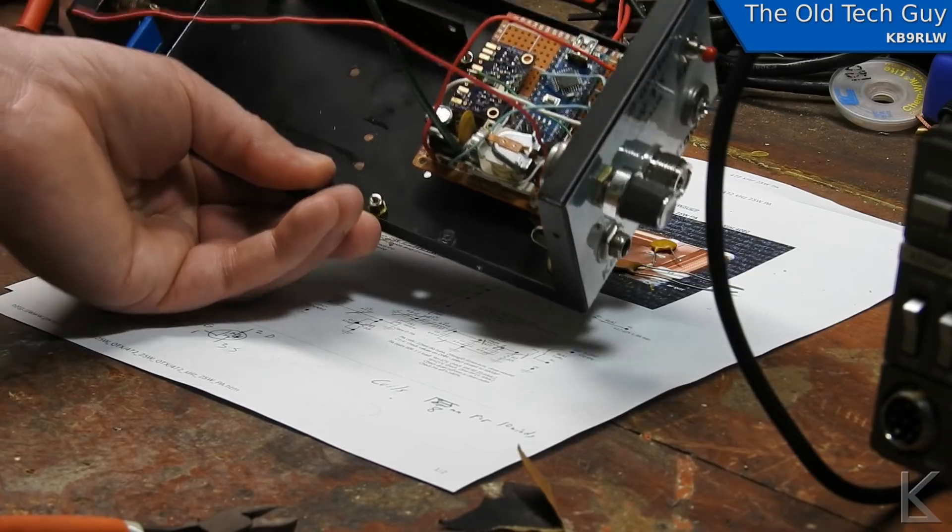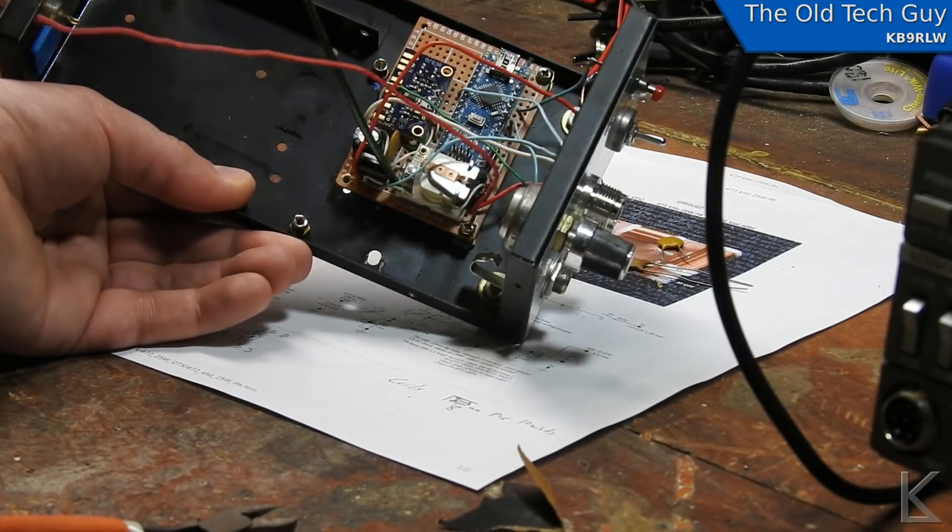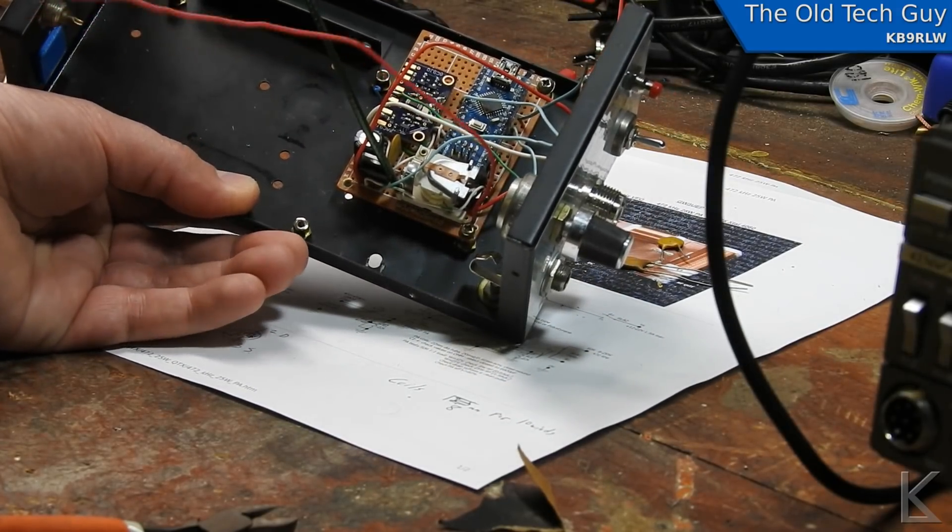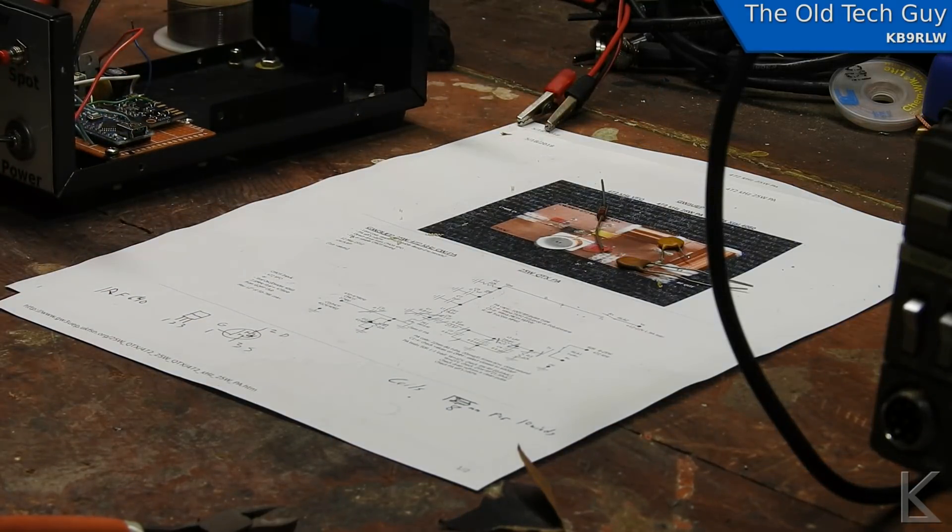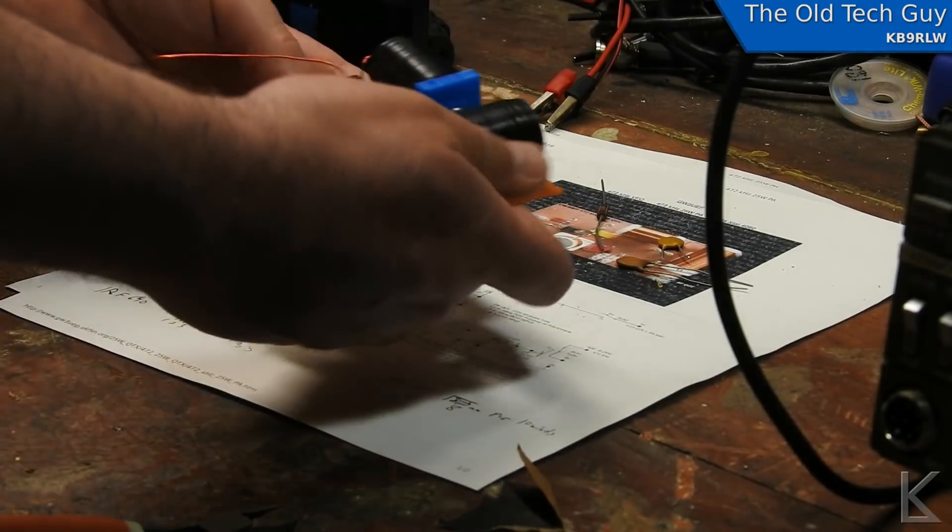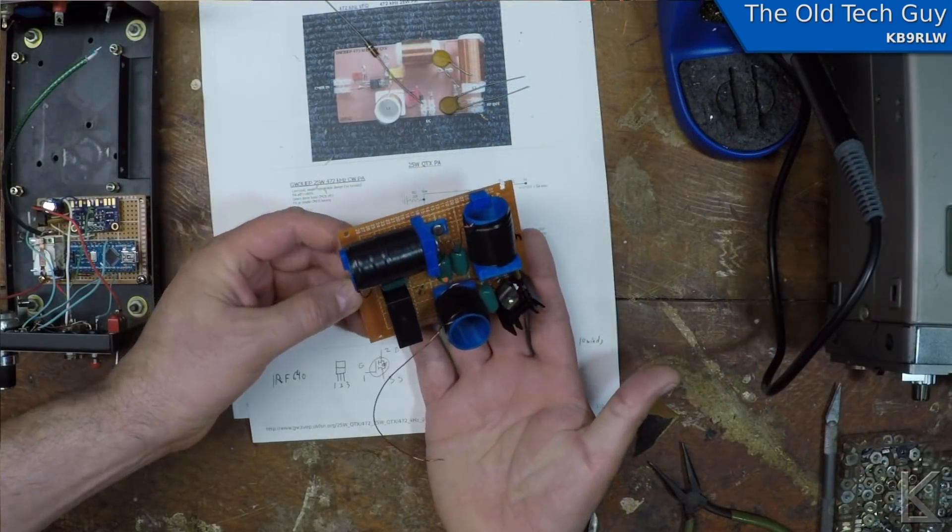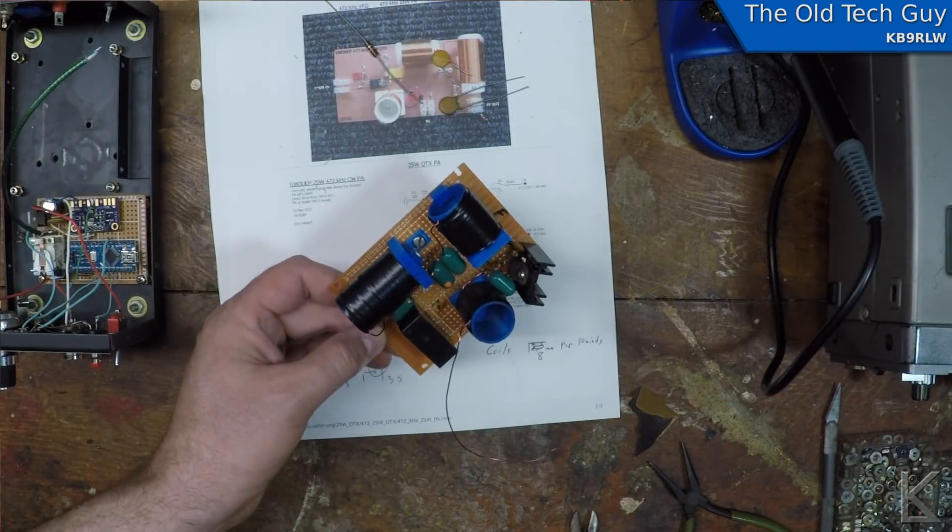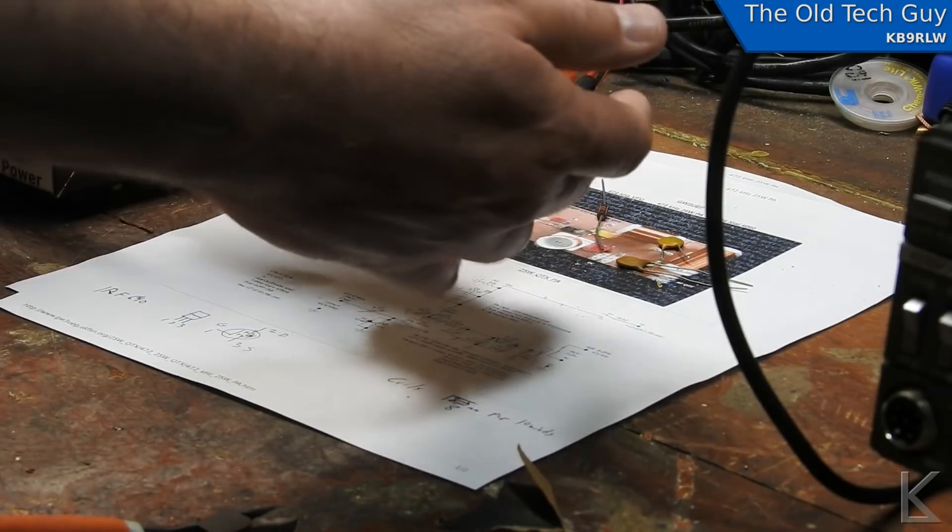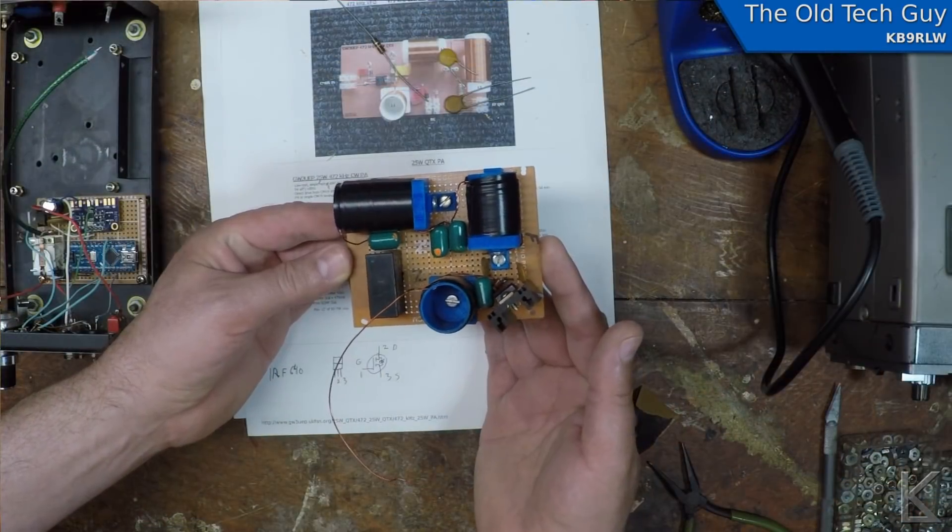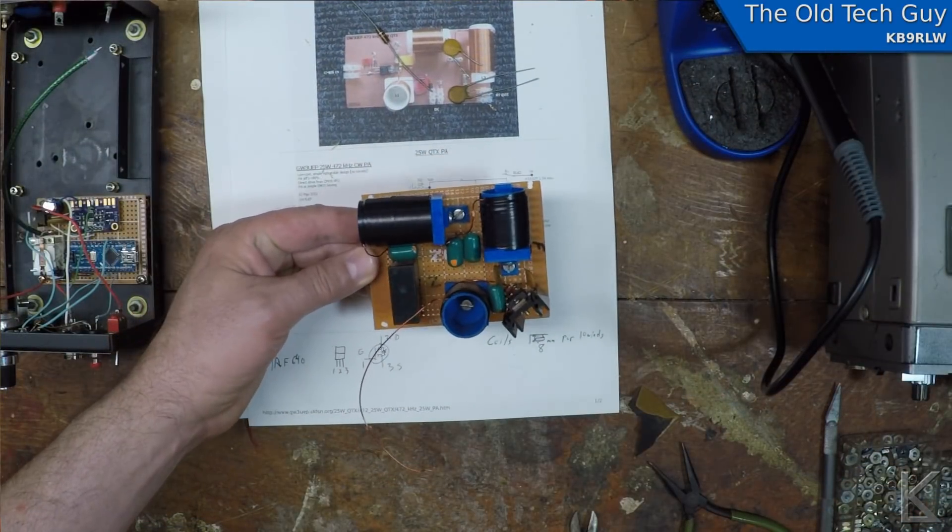VFO and control board as I said is done. I've got to write the software yet but yeah that's that. The power amplifier board I was working on yesterday and here it is. Show it to both cameras here. There's one camera view and here's the GoPro view. So it's almost done.